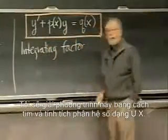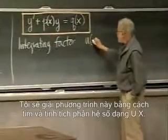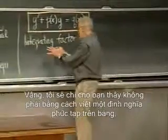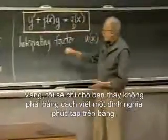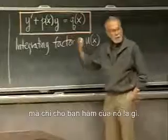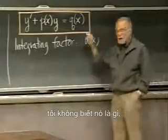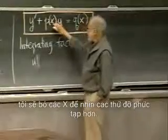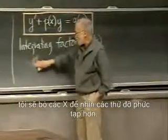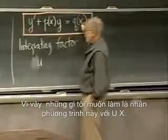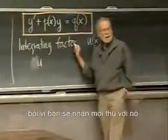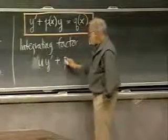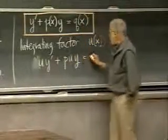I'm going to solve this equation by finding an integrating factor of the form u of x. What's an integrating factor? I'll show you not by writing an elaborate definition on the board, but by showing you what its function is. It's a certain function u of x — I don't know what it is yet, but here's what I want it to do. I want to multiply this equation through by u of x. That's why it's called a factor. So it's going to look like u y prime plus p u y equals q u.